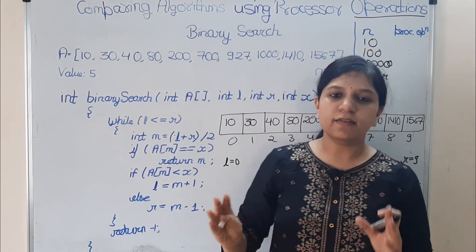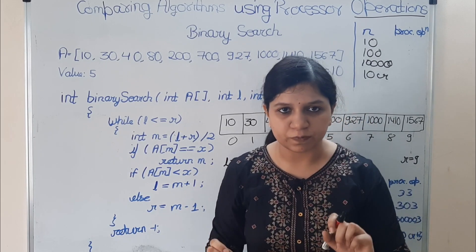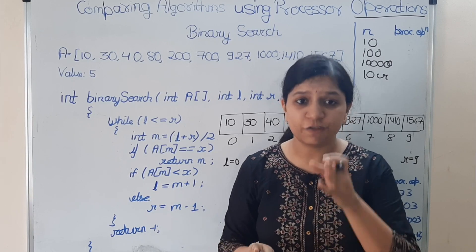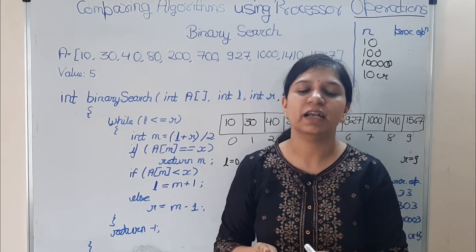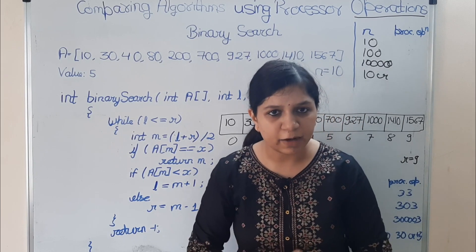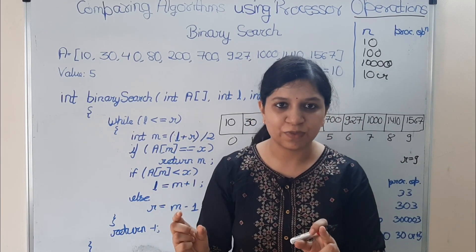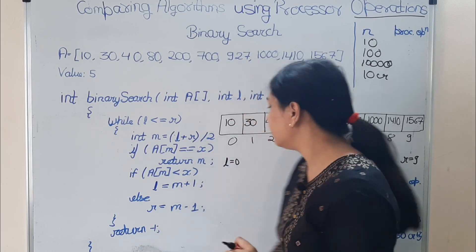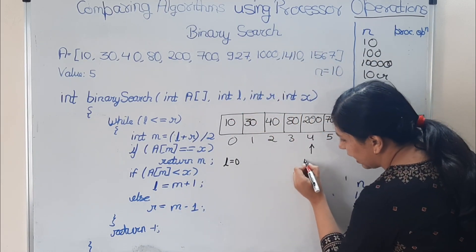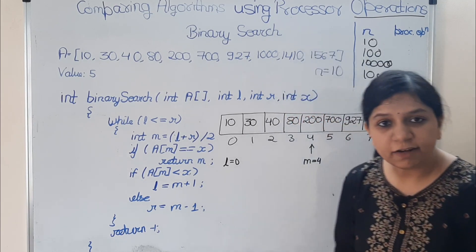Binary search — by the name you can understand — binary means 2, so we divide the array into two parts. We divide from the middle index. First we find the middle index: m = (l + r) / 2 = (0 + 9) / 2 = 4. So initially m is 4.